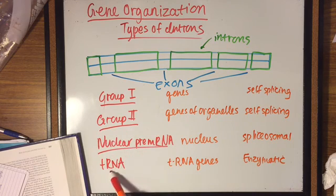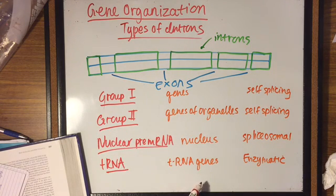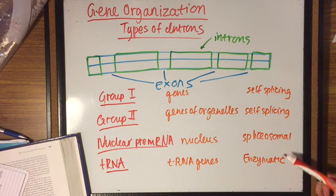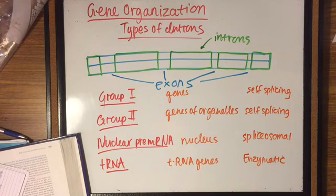Four types of introns are group 1, group 2, nuclear pre-mRNA, and tRNA, located in these specific areas. Group 1 and group 2 are self-splicing, and nuclear pre-mRNA is spliceosomal, while tRNA is enzymatic.